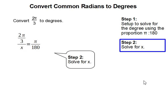Now we solve for x. Cross multiply. And together, 2 pi over 3 times 180 gets you 120 pi.